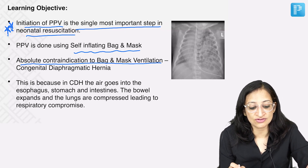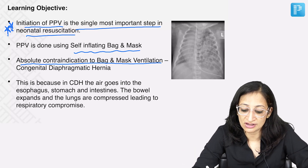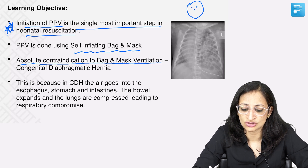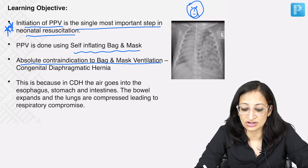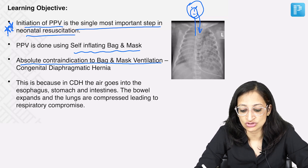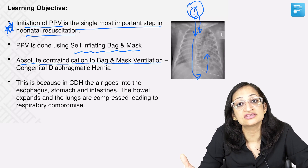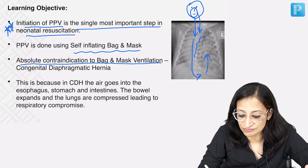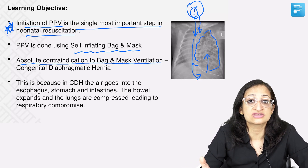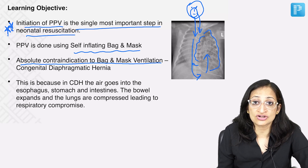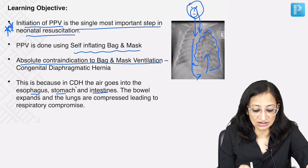Why is bag and mask ventilation contraindicated in CDH? When you do bag and mask ventilation, the mask covers both the mouth and nose of the baby, so air enters both through the nose into the trachea and from the mouth into the esophagus. The air going into the trachea is fine, but air going into the esophagus travels to the stomach and bowel loops. In CDH, the bowel loops have herniated into the thorax, so they get further distended and the lungs cannot expand, worsening respiratory distress instead of improving it.